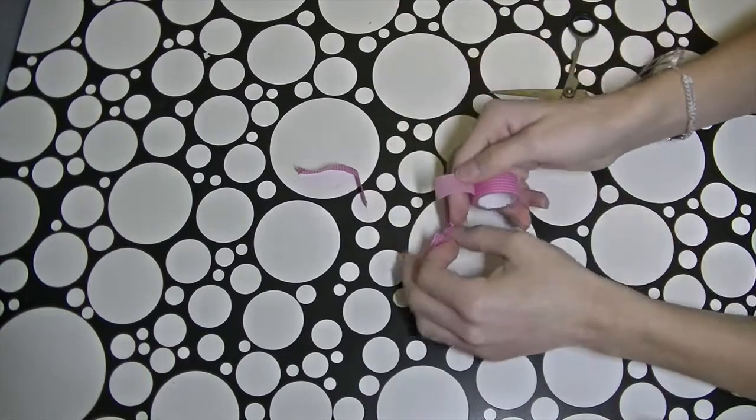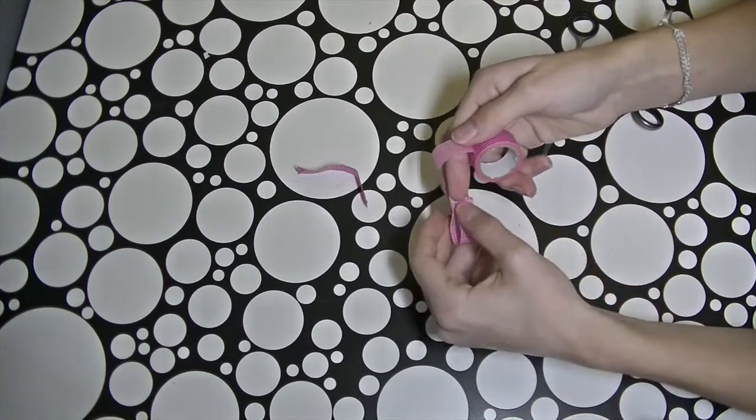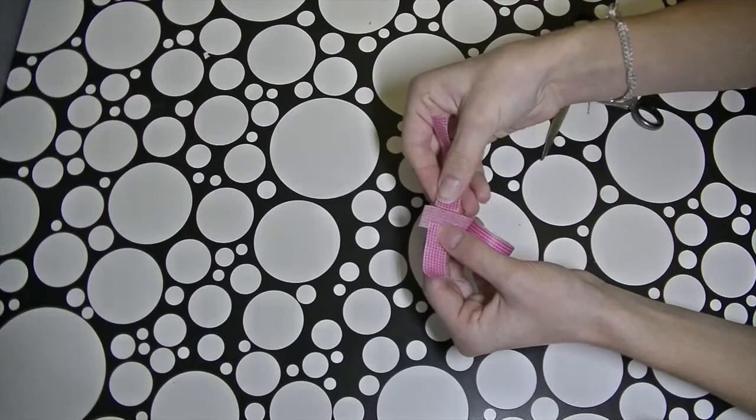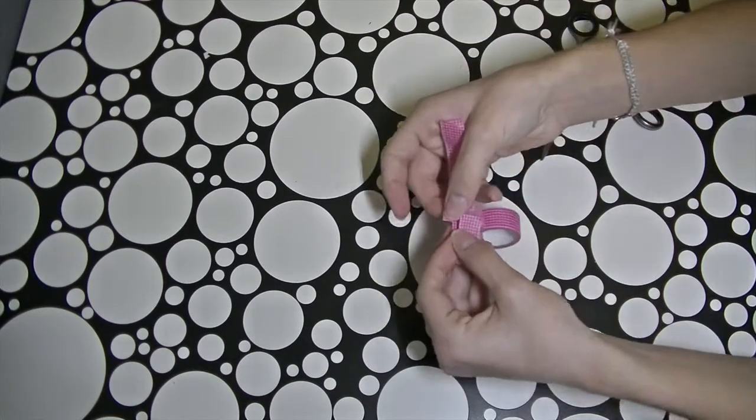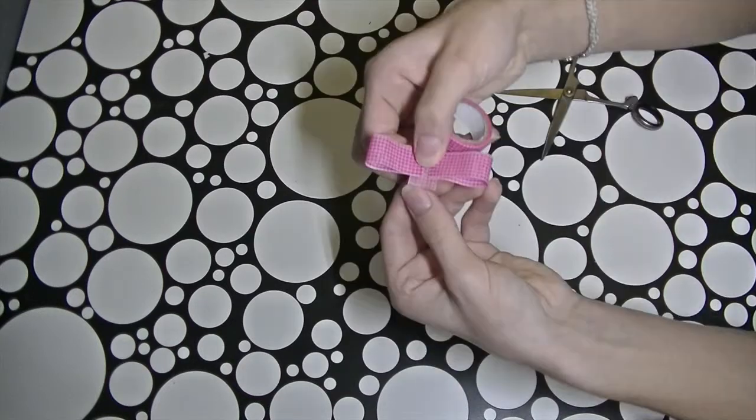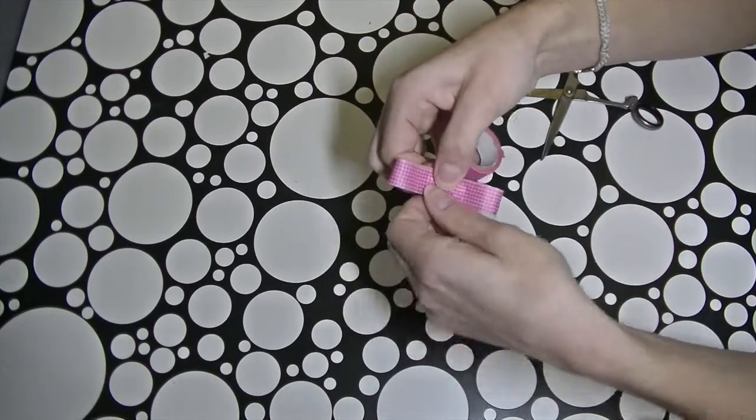Then you're going to roll out a bit of the washi tape and stick the two things you just made onto it. Then make the loops and put washi tape around it.